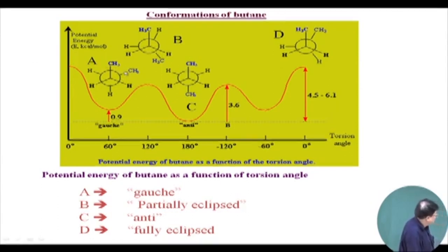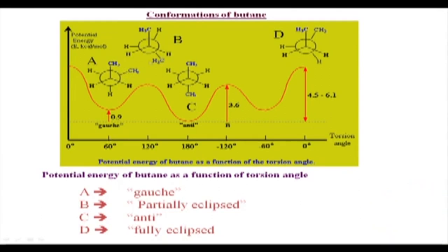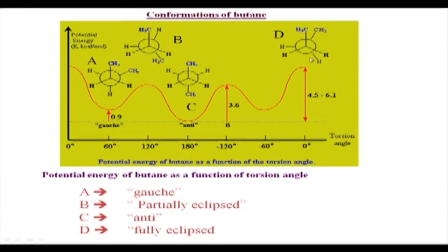Form A is the Gauche form, where the dihedral angle between the two methyls is 60 degrees. Form B is where the methyl and the hydrogen are eclipsing — it is shown slightly inclined because in a perfectly eclipsed form you cannot show one group as it would cover the other — so this is called partially eclipsed. Form C is where the methyl-methyl dihedral or torsional angle is 180 degrees — that is the anti form. Then you have the fully eclipsed form where the methyl groups are eclipsing each other, on top of each other — that is the fully eclipsed form.